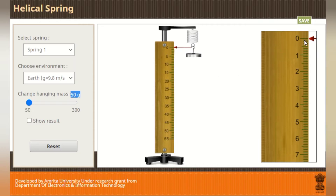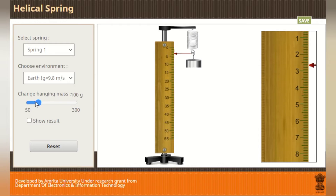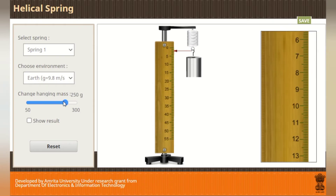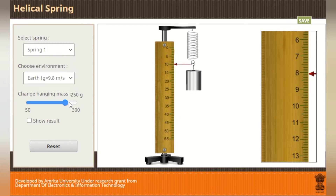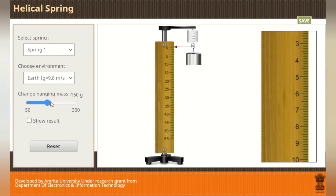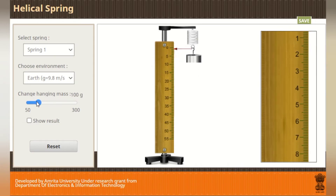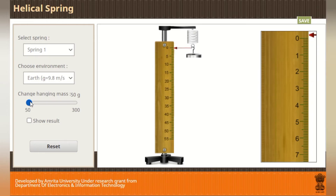First, with no load in the pan, we note down the reading of the pointer, which shows zero. After that, we add 40 grams and note the reading. We continue adding masses up to 200 grams and note the corresponding extensions. Then we find the mean extension length L for each load and plot a graph between load M along the x-axis and extension L along the y-axis.